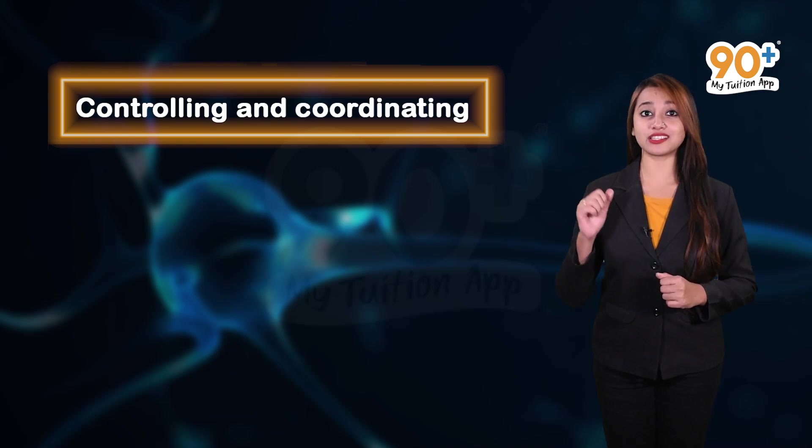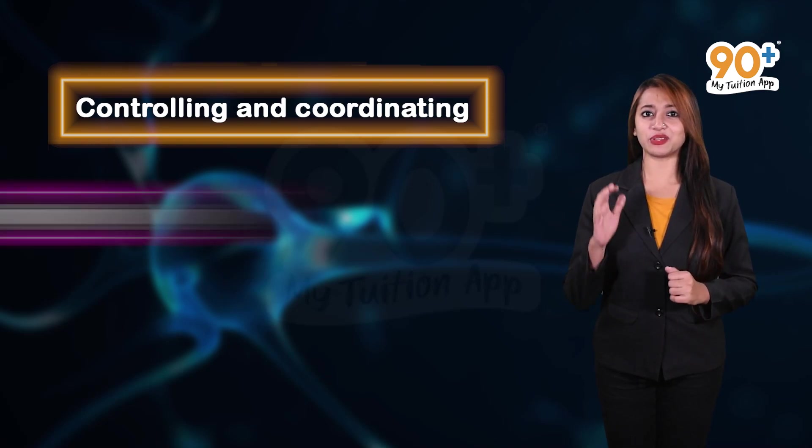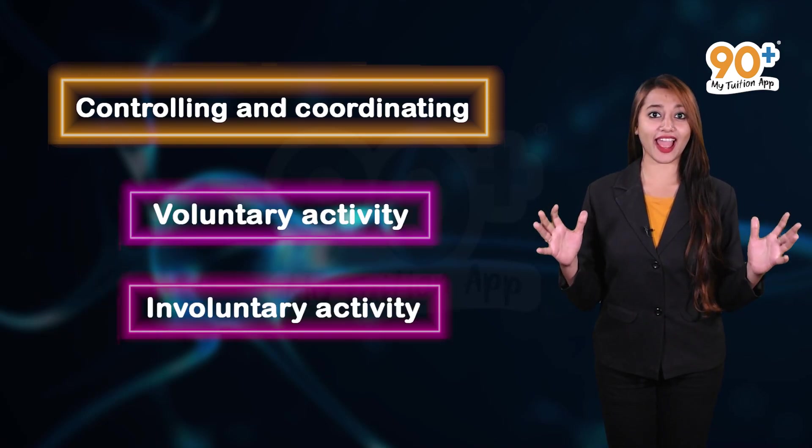The main function of nervous system lies in controlling and coordinating different movements in the body including the voluntary and involuntary activities.